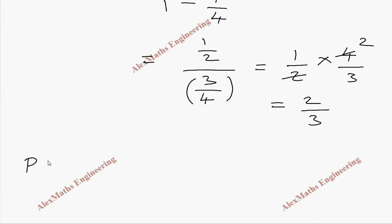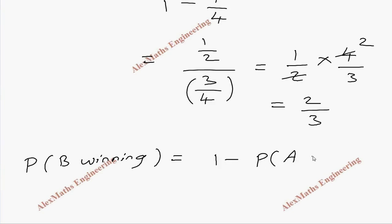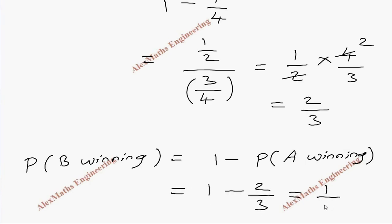The probability of B winning is 1 minus the probability of A winning, so 1 − 2/3 = 1/3. Therefore, the probability of A winning is 2/3 and the probability of B winning is 1/3.